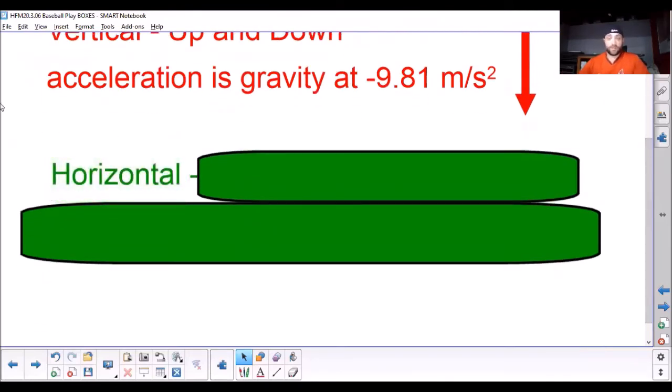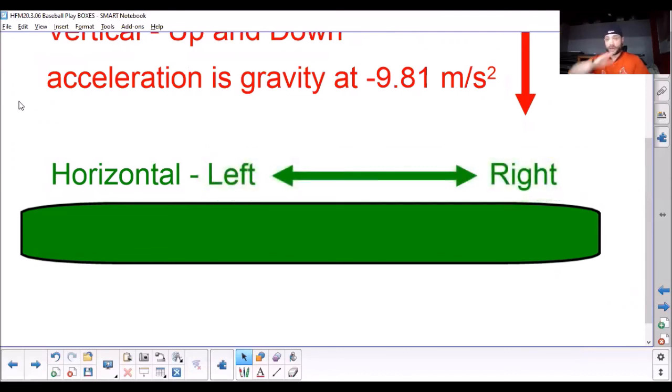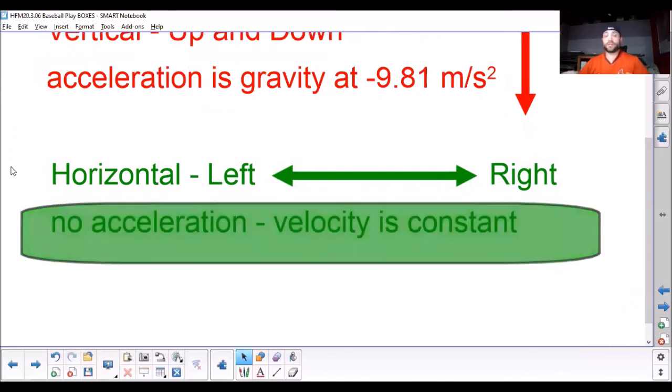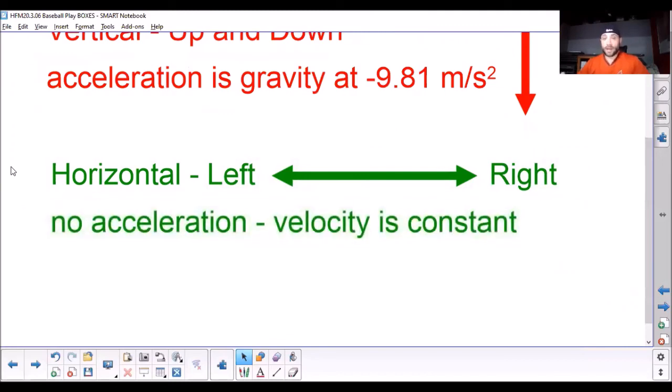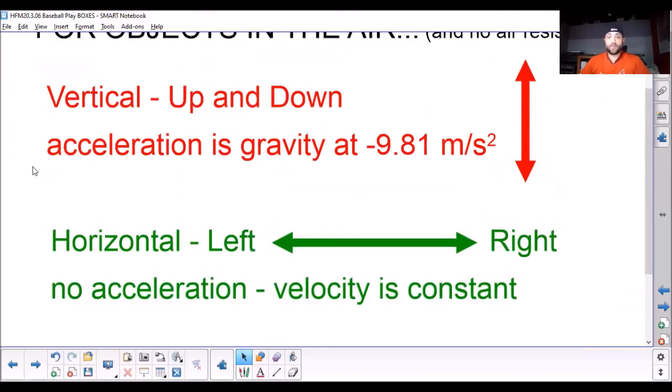The horizontal motion of the object. And again, this is for a ball moving through the air. The horizontal motion is the left and the right motion. What's moving across? That one is completely different. There is no acceleration. And again, this is only for if there is no air resistance. If there is no air resistance, the horizontal left and right motion has no acceleration.